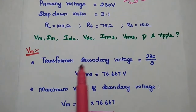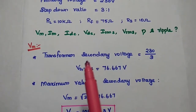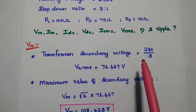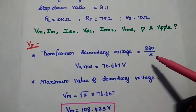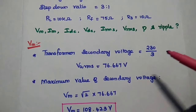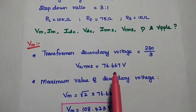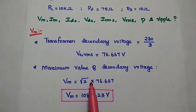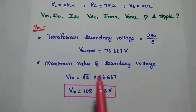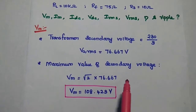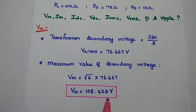To find the maximum voltage, we divide the primary voltage by the step-down ratio of 3:1, giving a secondary RMS voltage of 76.667 V. The maximum secondary voltage is Vm = √2 × 76.667 = 108.423 V.